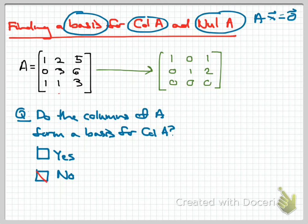The answer, you might be surprised to find out, is no — not in this case. You might say, wait a minute, isn't the column space of A precisely the space spanned by the columns of A? And you'd be right about that. But to be a basis, we need more than just spanning — we also need linear independence. That is not the case here. The third column is really just 1 times the first column plus 2 times the second column. You can check: 1 + 2×2 = 5, 0 + 2×3 = 6, 1 + 2×1 = 3. So the three columns span the column space but do not form a basis because the set is not linearly independent.